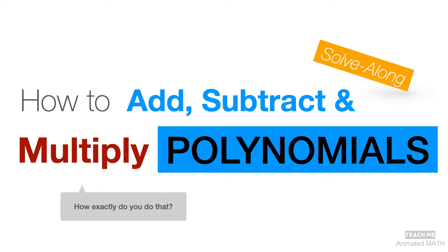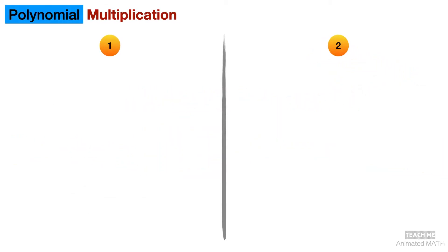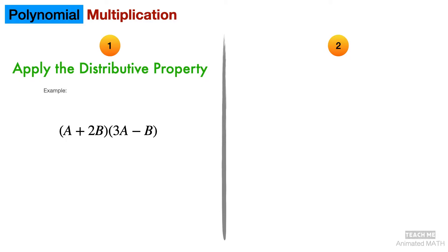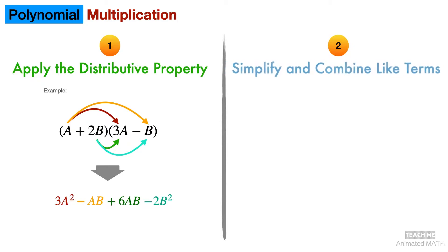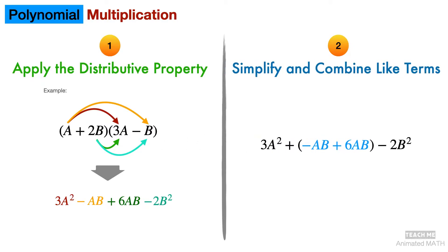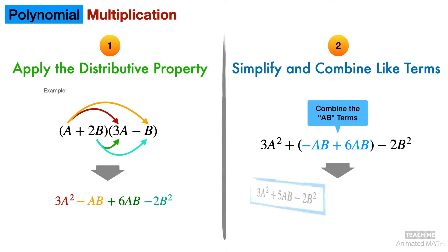So how do you do that? The most important thing to remember when multiplying polynomials is to first apply the distributive property. Each term in the first polynomial is multiplied by each term in the second polynomial. Next is to simplify and combine like terms.